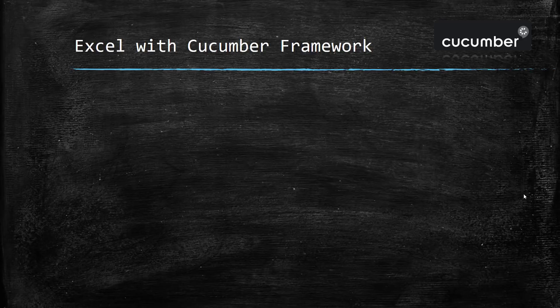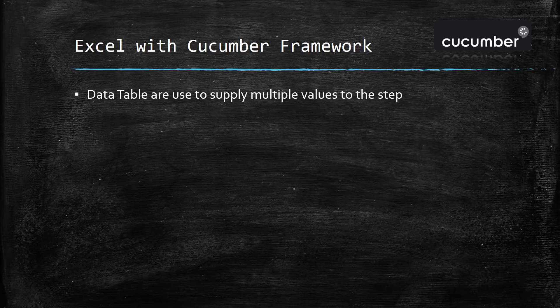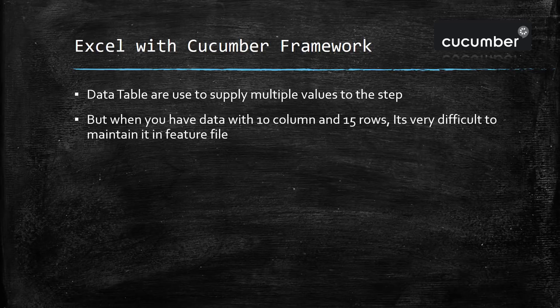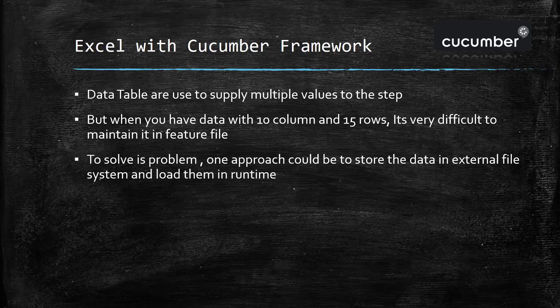In this video I'm going to discuss how you can integrate an Excel file with the Cucumber framework. Assume there is a step inside a feature file which requires multiple sets of data. One straightforward approach is to use the data table concept, but when you have data with 10 columns and 15 rows, it is very difficult to maintain them inside a feature file. In that case, the approach is to store the data inside some external file system and load them during runtime.